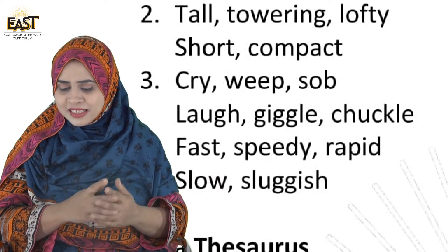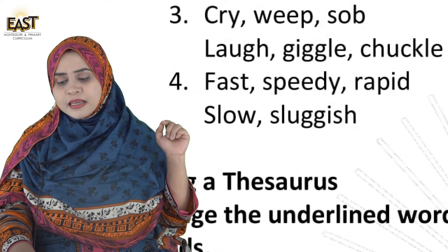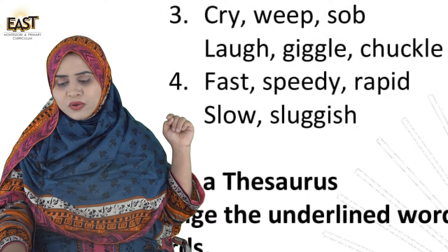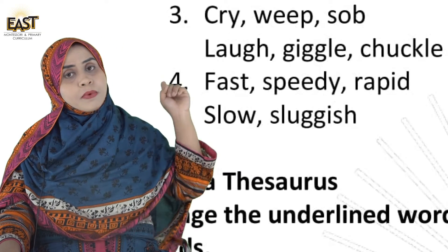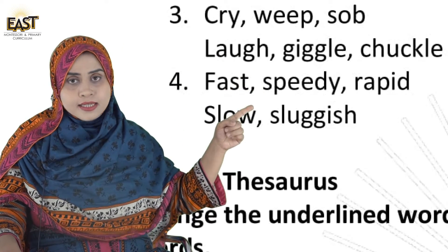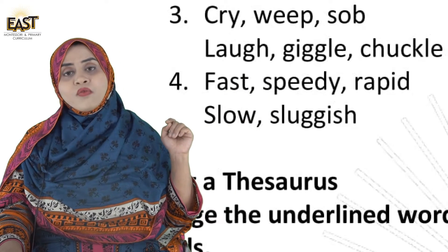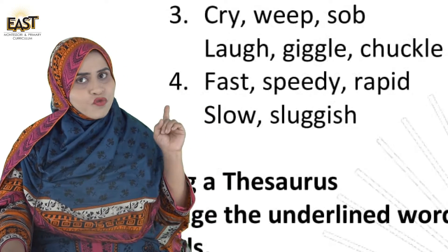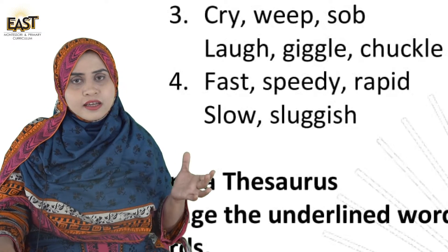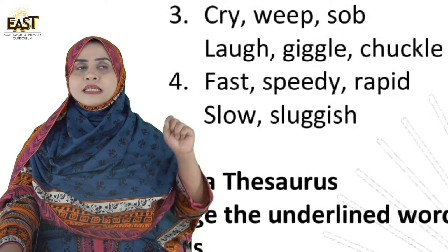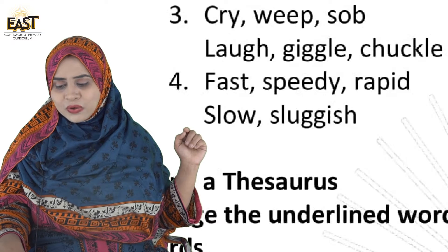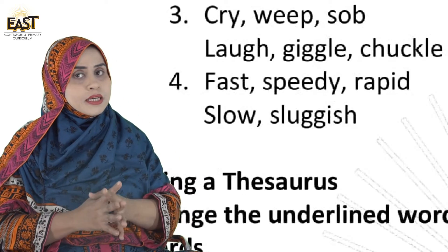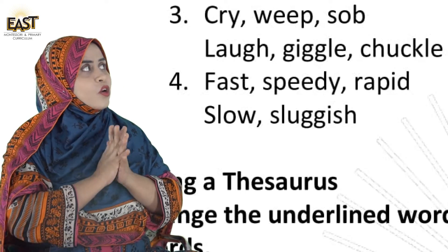Now we move towards number 4. The first word is 'Fast' — write it in Group 1. Then 'Slow' — this is the opposite of fast, yani sust/aahista — so write it in Group 2. Next is 'Speedy' — bahut zyada speed wala, so it relates to fast, and goes in Group 1. Then 'Rapid' means tez, bahut zyada tez, so write it in Group 1 as well.